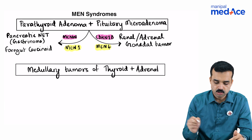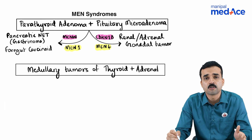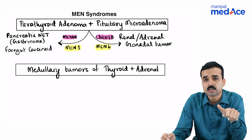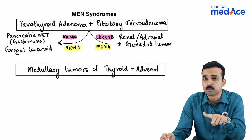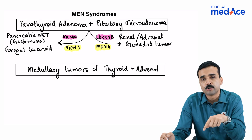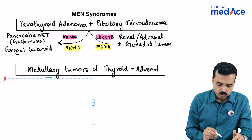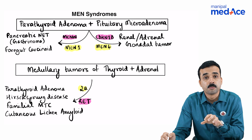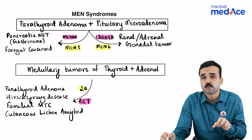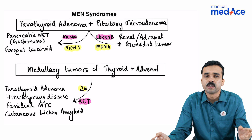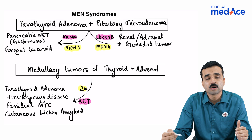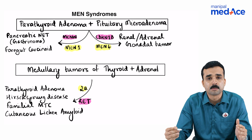Rather, if you come across a combination of tumors arising from the medulla of thyroid or adrenals — that means a combination of medullary thyroid carcinoma along with pheochromocytoma — then think of either MEN2A or MEN2B. MEN2A is also known as MEN2 syndrome. This is more likely if this combination of medulla tumors occurs along with parathyroid adenoma, which is classical MEN2A, or presence of Hirschsprung's disease, familial thyroid carcinoma, or cutaneous lichen amyloid. MEN2A occurs due to a mutation in the RET gene, which is present on chromosome number 10.